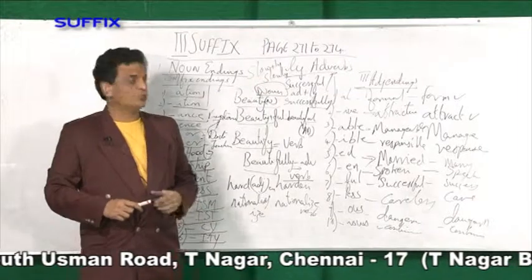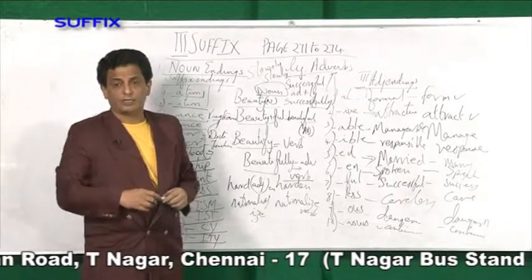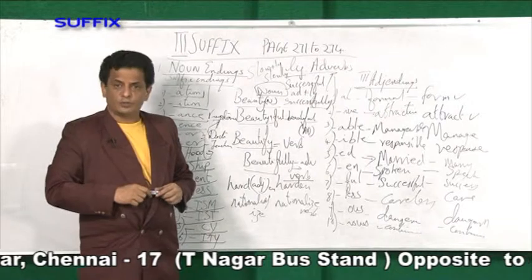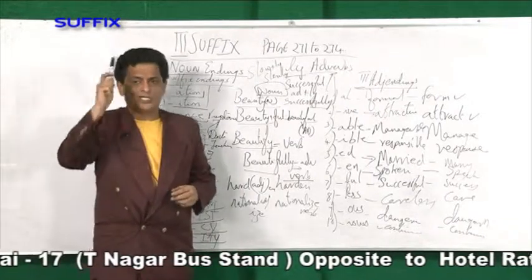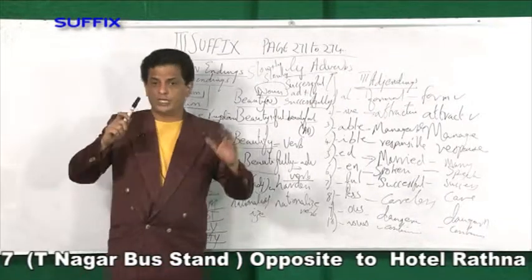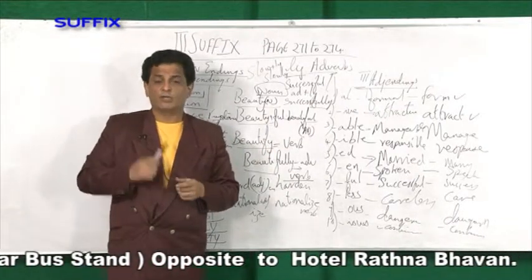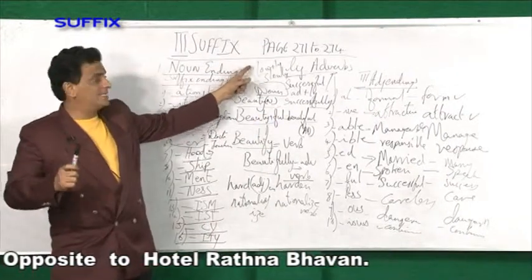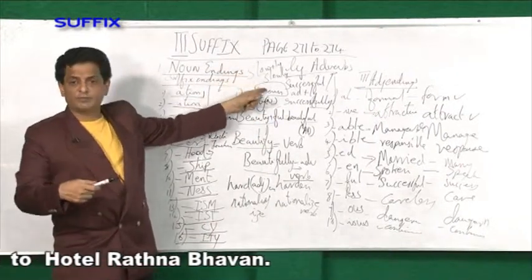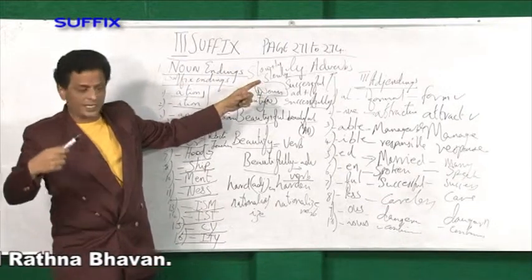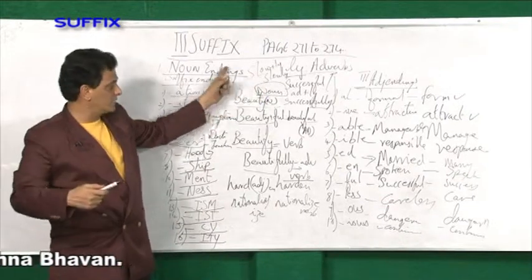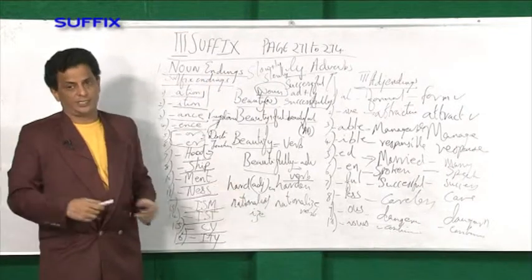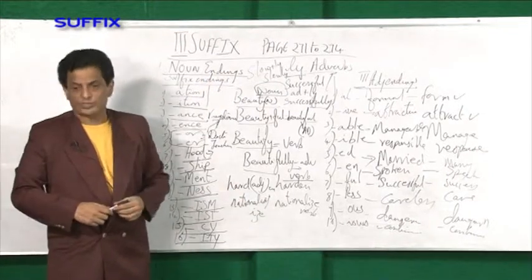Up to page 274, you have quite a number of sentences to be formed. Form the sentences and be master in this — this is the very important lesson here, my dear friends. Word power can be increased by studying the earlier two chapters and the suffix chapter. Try to memorize all noun endings, verb endings, and abstract noun endings. Thank you.